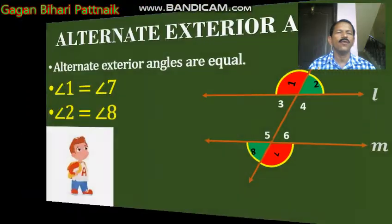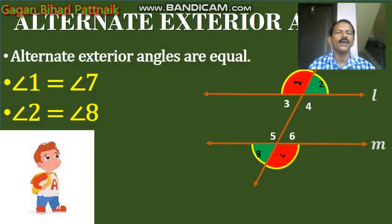Then alternate exterior angles. Alternate exterior angles are also equal to each other. Angle 1 is equal to angle 7, and angle 2 is equal to angle 8.